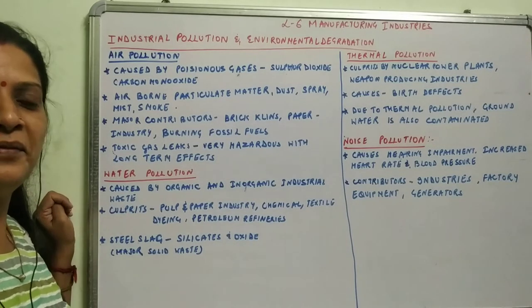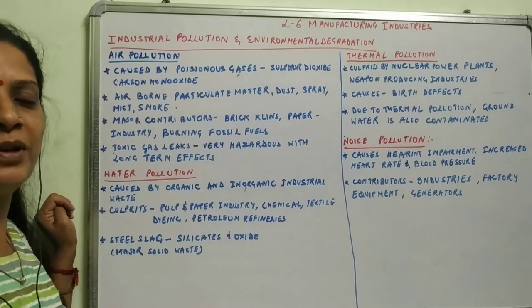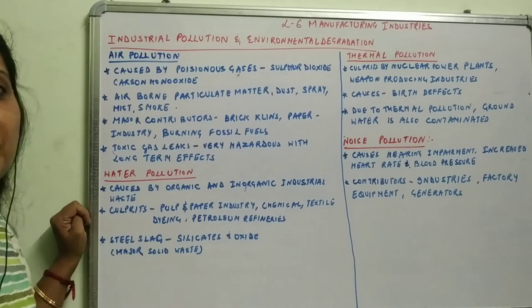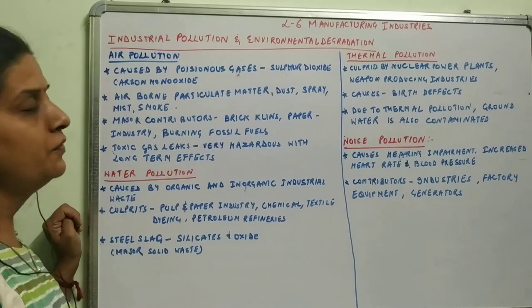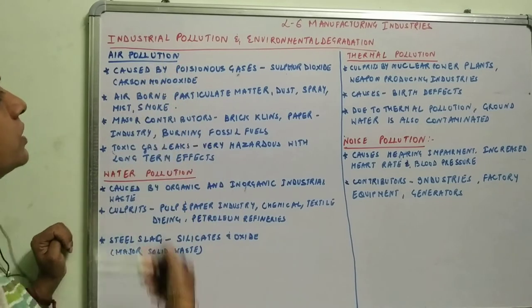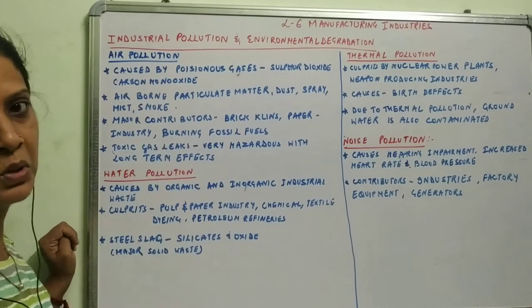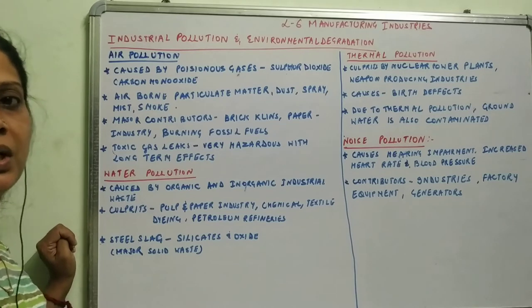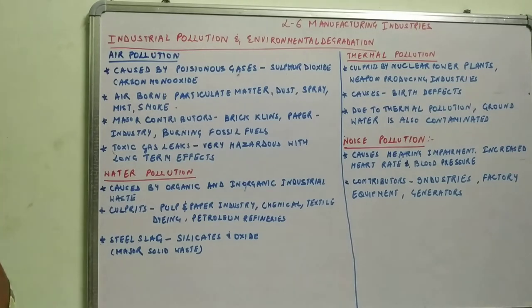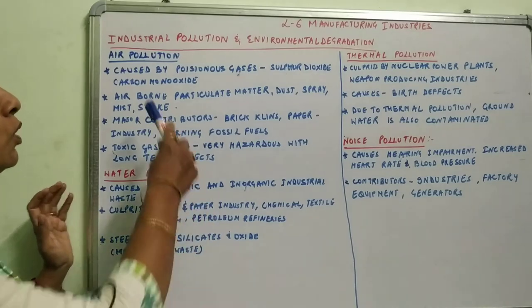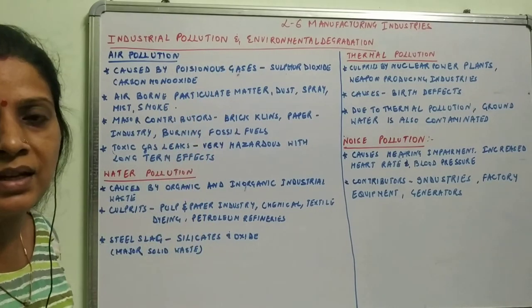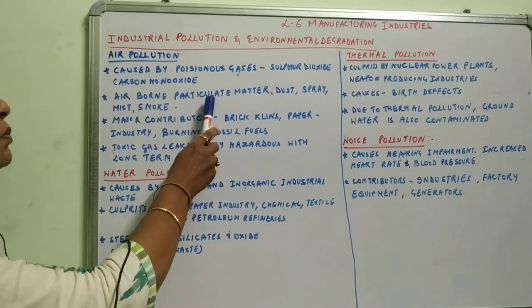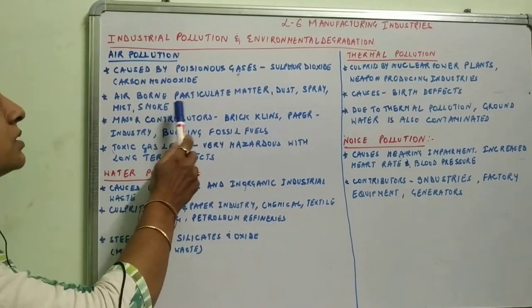Let's begin with the next topic of manufacturing industries: industrial pollution and environmental degradation. The first topic is air pollution. As you all know, there are different types of pollution — air pollution, noise pollution, thermal pollution, and water pollution. Air pollution is caused by poisonous gases such as sulfur dioxide and carbon monoxide, and also by airborne particulate matter, dust, spray, and mist.